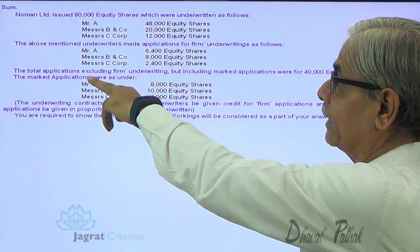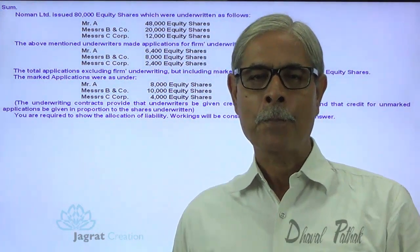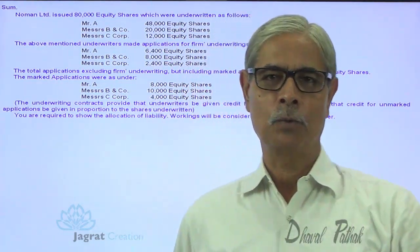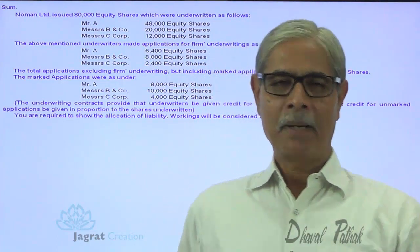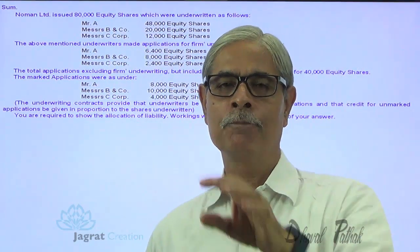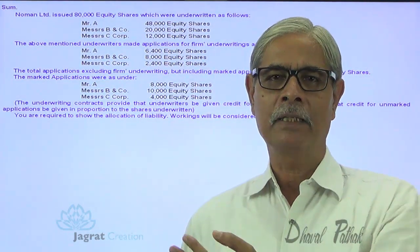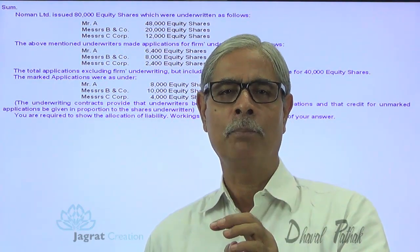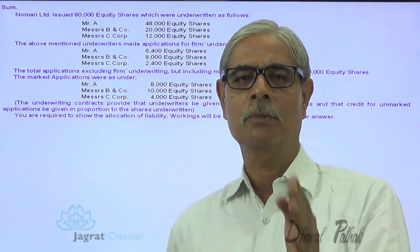The total applications received, excluding firm underwriting but including marked applications, were 40,000 equity shares. What is a marked application? When I advertise the issue made by a company, I recommend my clients to fill in the application form. When they fill in the form, there is a stamp — my marking — on the form. The marking of A, B, or C is found on the share application form. Those application forms are received by the company. If they are marked, the marking will be of A, B, or C. If there is no marking, the form went directly to the company without the broker's stamp.